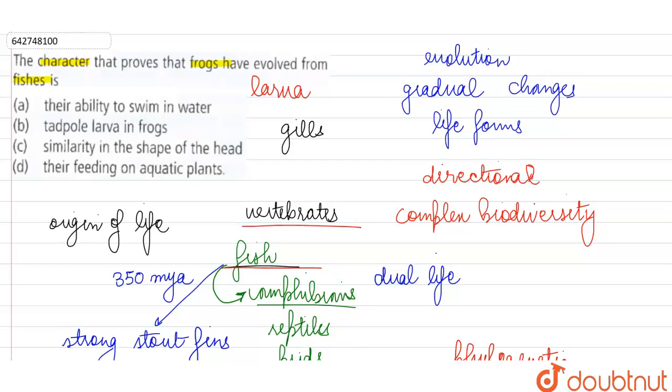The adult frog has no need for gills on the land. It breathes with the help of its lungs. In the water it does respiratory exchange with the help of its moist skin. But the tadpole or the young ones of the frog have these gills.